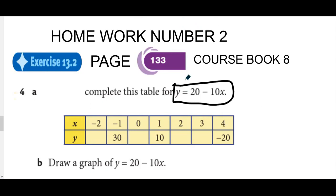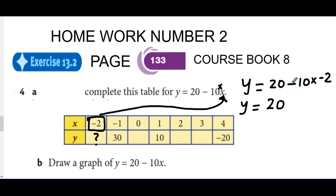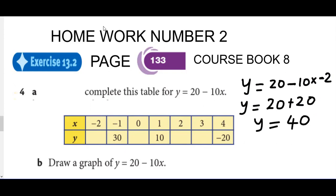So I'm going to start with this value of X. The value of X here is negative two. We are supposed to substitute X equal to negative two in this equation and find the value of Y. So Y equals to 20 minus 10x. Between 10 and x there is a hidden multiplication sign, so you do 10 times negative two. Negative times negative makes positive and 10 times two is 20, so Y equals to 40. Go ahead filling the value of Y as 40.